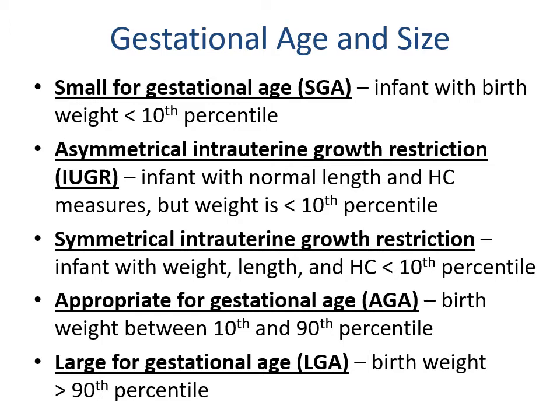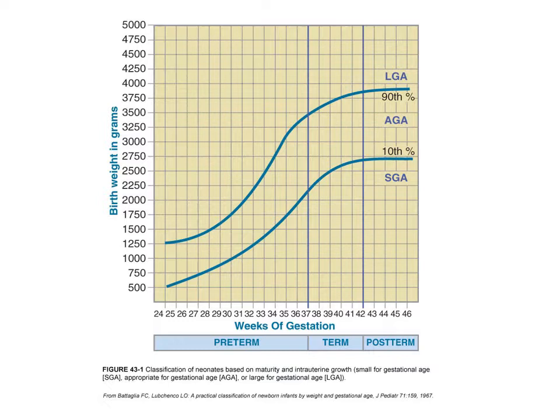Small for gestational age is an infant with a birth weight less than the 10th percentile. Asymmetrical intrauterine growth restriction describes an infant with normal length and head circumference but weight less than the 10th percentile. Symmetrical intrauterine growth restriction means weight, length, and head circumference are all less than the 10th percentile. Appropriate for gestational age falls between the 10th and 90th percentile, and large for gestational age is a birth weight greater than the 90th percentile.